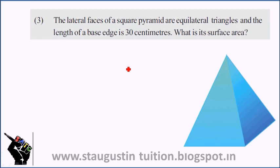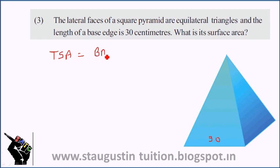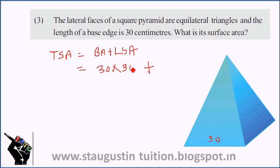The total surface area equals base area plus lateral surface area. The base area equals side², which is 30 × 30. The lateral surface area (LSA) equals the area of 4 equilateral triangles.